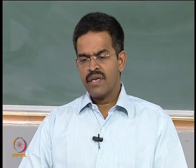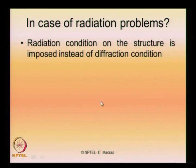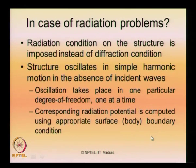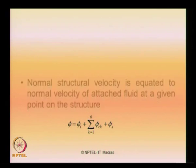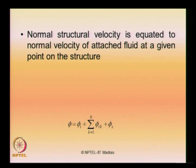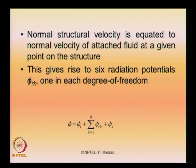If you are interested in studying the radiation problem, the radiation condition on the structure is imposed instead of the diffraction condition. The structure oscillates in simple harmonic motion in the absence of incident waves, with oscillation taking place in one particular degree of freedom at a time. The corresponding radiation potential is computed using the appropriate body boundary condition. The normal structural velocity is equated to the normal velocity of the attached fluid at any given point on the structural member. This gives rise to six radiation potentials phi_r_k, one in each degree of freedom, where k stands for degrees of freedom 1 to 6.